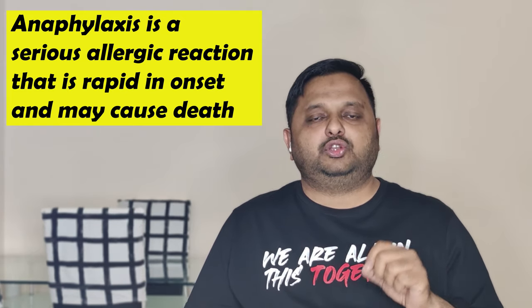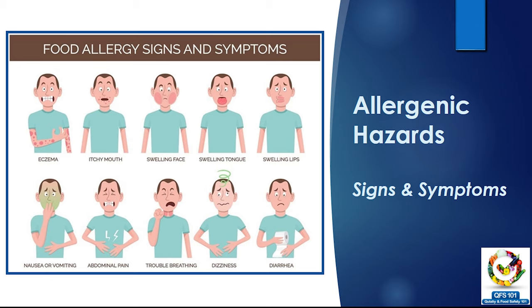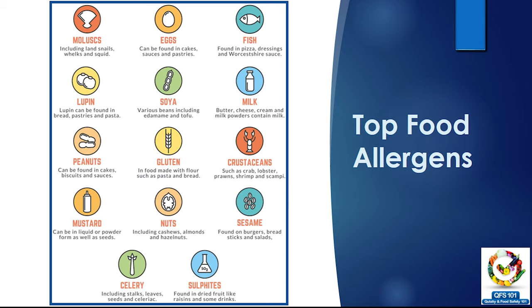Symptoms of allergy include eczema, itchy mouth, swelling of the face and tongue, nausea, vomiting, abdominal pain, trouble breathing, unconsciousness, and diarrhea. The top allergens are: mollusks, eggs, fish, lupin, soya, milk, peanuts, gluten, crustaceans like shellfish, mustard, nuts, sesame, celery, and sulfites. When any of these come into contact with non-allergenic food items, it constitutes allergenic contamination.